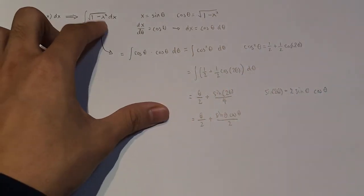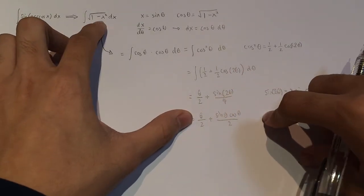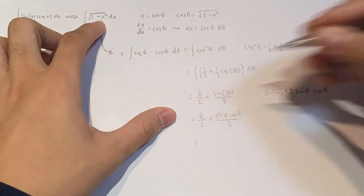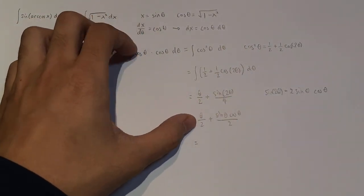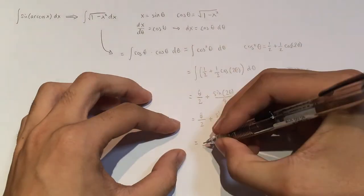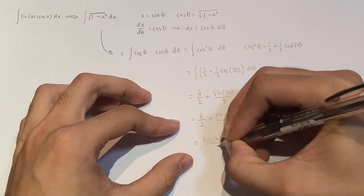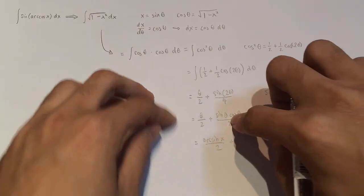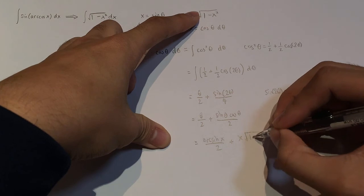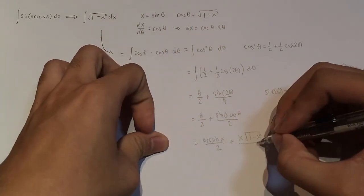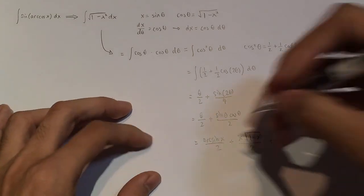But because our integral was in terms of x and this is in terms of theta, we have to turn this theta back into being in terms of x. So what this will equal to is theta, because x is sine theta, theta will just be inverse sine of x or arcsine of x over 2 plus sine of theta is just x. Cosine of theta is just the square root of 1 minus x squared divided by 2. And of course, constant of integration, don't forget that.